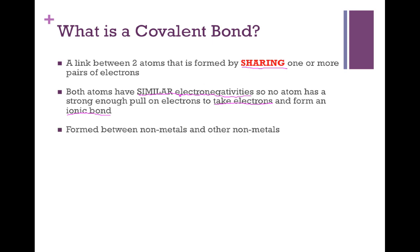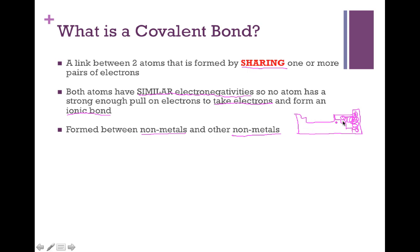Covalent bonds are formed between non-metals and other non-metals. If you reference the periodic table, all of our non-metals are located in the top right corner, separated by a staircase. From our periodic trends, elements that go to the right and up on the periodic table have the highest electronegativities. These non-metal elements are the furthest right and furthest up, so they all have very high, very similar electronegativities, which is what causes them to form those covalent shared bonds.